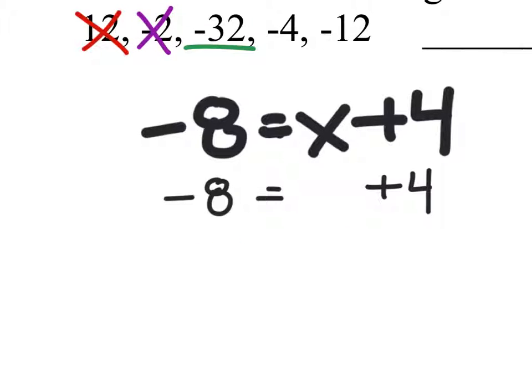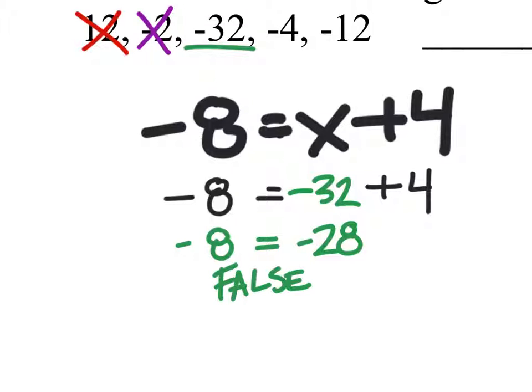Now let's go ahead and try negative 32. So I'm replacing x with negative 32. Negative 32 plus 4 is negative 28. Well, does negative 8 equal negative 28? That is false. So we're going to take out that negative 32 as well. It is not a solution.